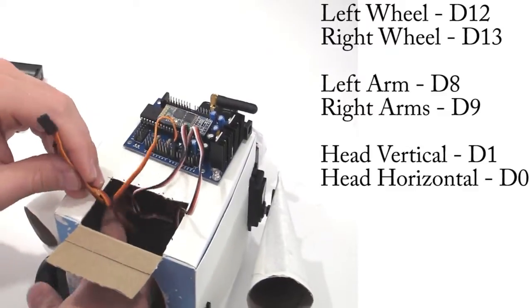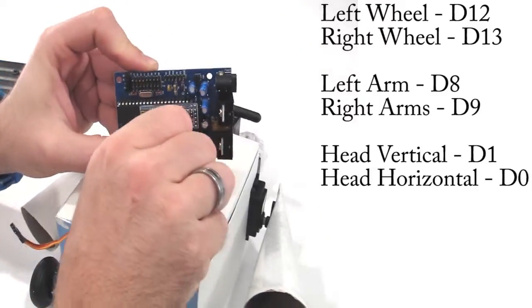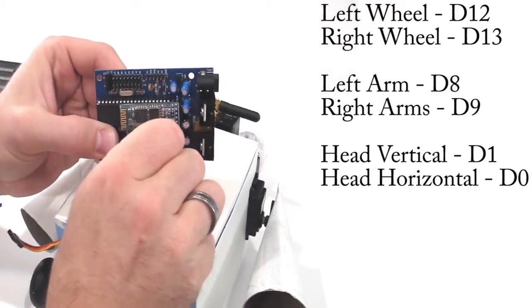Connect the horizontal head servo cable to D0. Connect the vertical head servo cable to D1.